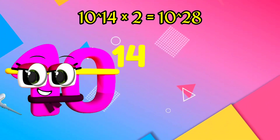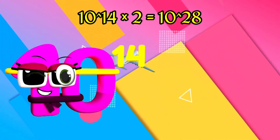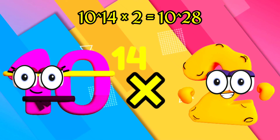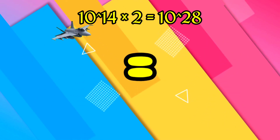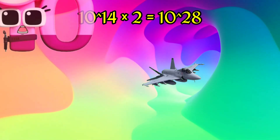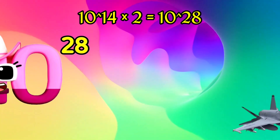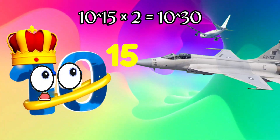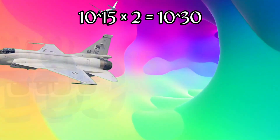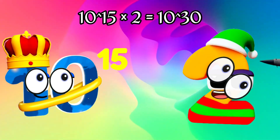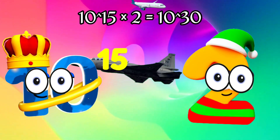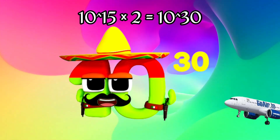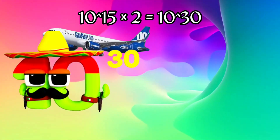100 trillion. Two times equals 10 octillion quadrillion. I'm made up of 30 strong zeros.